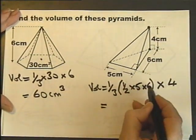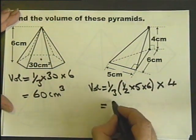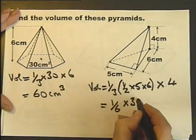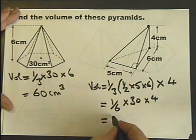So this is 5 times 6 is 30. So you've got a third times a half, times 30. So a sixth of that is 5, 5 times 4 is 20.